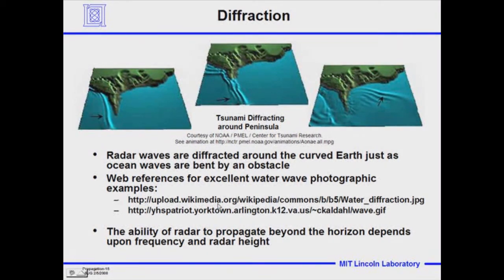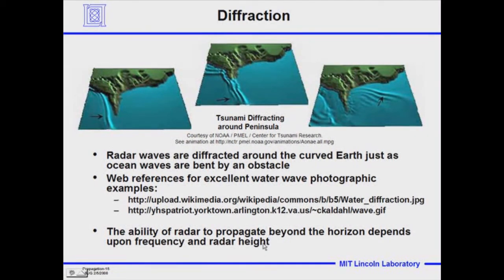There are two other excellent examples — for copyright reasons I couldn't put them on this open website, but if you go to the two URLs listed, you'll see beautiful examples of water waves diffracting around a breakwater and around a landmass. The ability of radar to propagate beyond the horizon depends upon the frequency of the radiation. The lower the frequency, the easier it is to propagate around an obstacle. It also depends upon the height of the radar, which gives better line of sight over the particular obstacle — whether it's a tall hill, a mountain, or the normal horizon of a flat Earth.